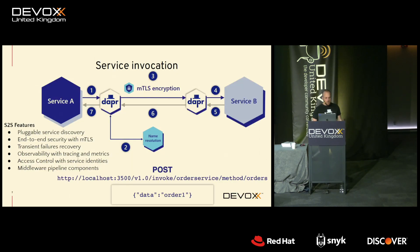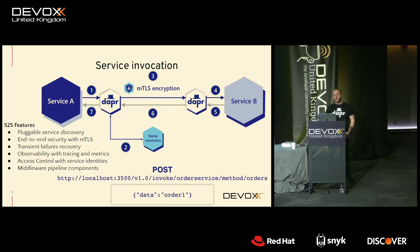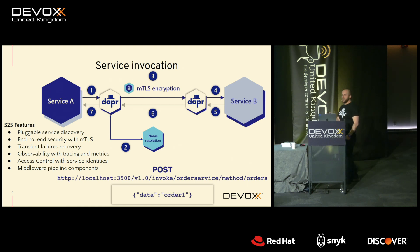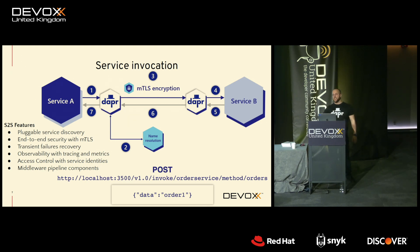The first API is service invocation. Say service A tries to invoke service B — rather than calling it directly or using some kind of service discovery HTTP client resiliency library, you can use the sidecar. From service A, you call the sidecar's invoke API with service B and the method you want to call. DAPR will use its name resolution component — multicast DNS locally, Kubernetes service discovery on Kubernetes, or HashiCorp Consul in other environments. It will encrypt the request with MTLS, deliver it to the other sidecar, call the service, return the result, and retry any transient failures.